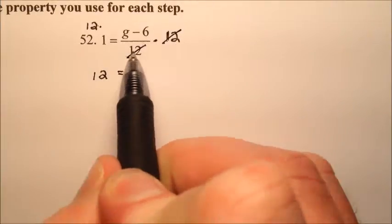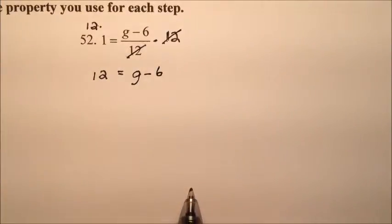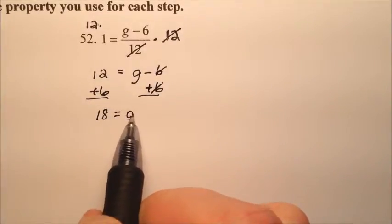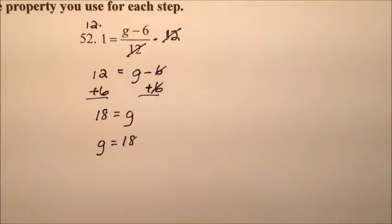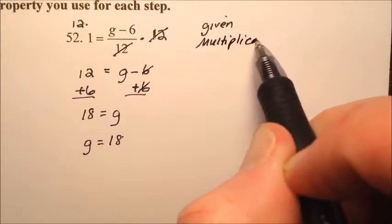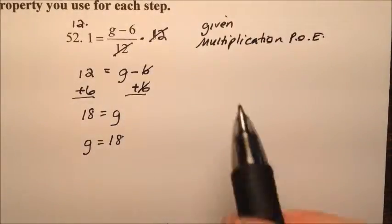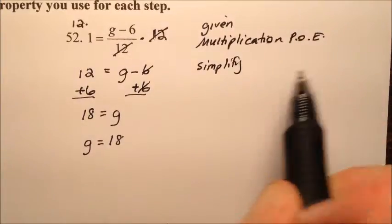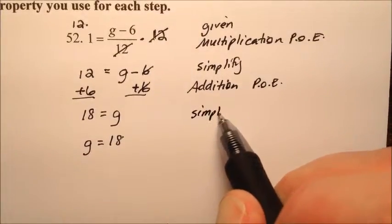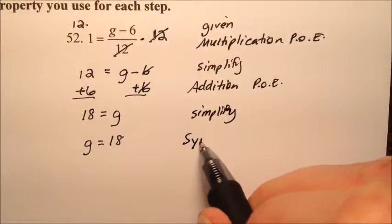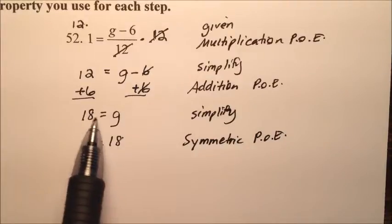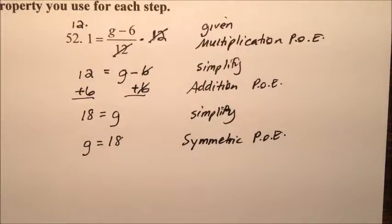The 12 we multiplied by cancels the denominator, leaving g minus 6. The g is almost by itself, so we add 6 to both sides. Those cancel, giving 18 on the left and g on the right, so g equals 18. The steps were: given, multiplication property of equality, simplify, addition property of equality, simplify, symmetric property of equality. The solution for 52 is g equals 18.